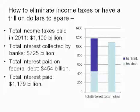In 2011, income taxes were $1.1 trillion. The total interest collected by banks was $725 billion, and the total interest paid on the federal debt was $454 billion. If we borrowed only from our own central bank, as various countries have done, we would pay no interest — or in effect, we would collect the interest back from ourselves, making it effectively interest-free. So $454 billion plus $725 billion gives $1.179 trillion — actually more than we paid in income taxes.